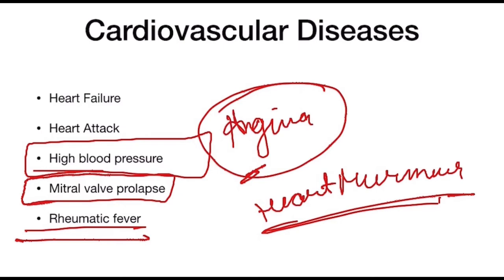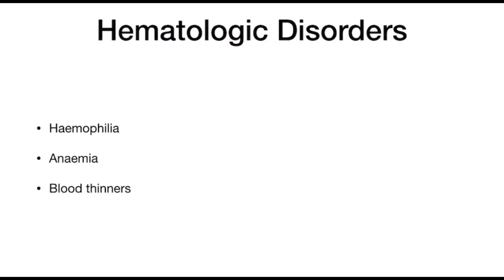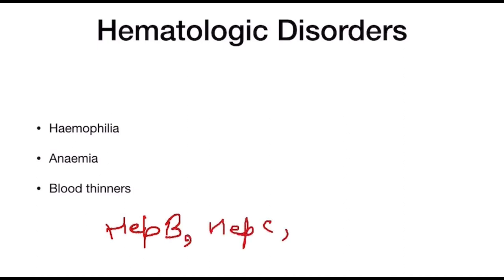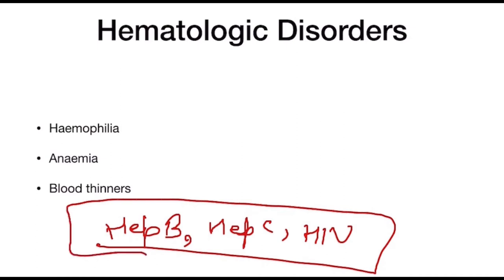Hematological disorders include hemophilia, which is an inherited bleeding disorder. It can be hemophilia A, hemophilia B, or von Willebrand's disease — also known as hemophilia C. These patients must be identified and managed in cooperation with a physician. Patients with these deficiencies may require factor replacement before invasive procedures as well as aggressive post-operative measures. Regarding blood transfusions, markers for hepatitis B, hepatitis C, and HIV need to be evaluated.